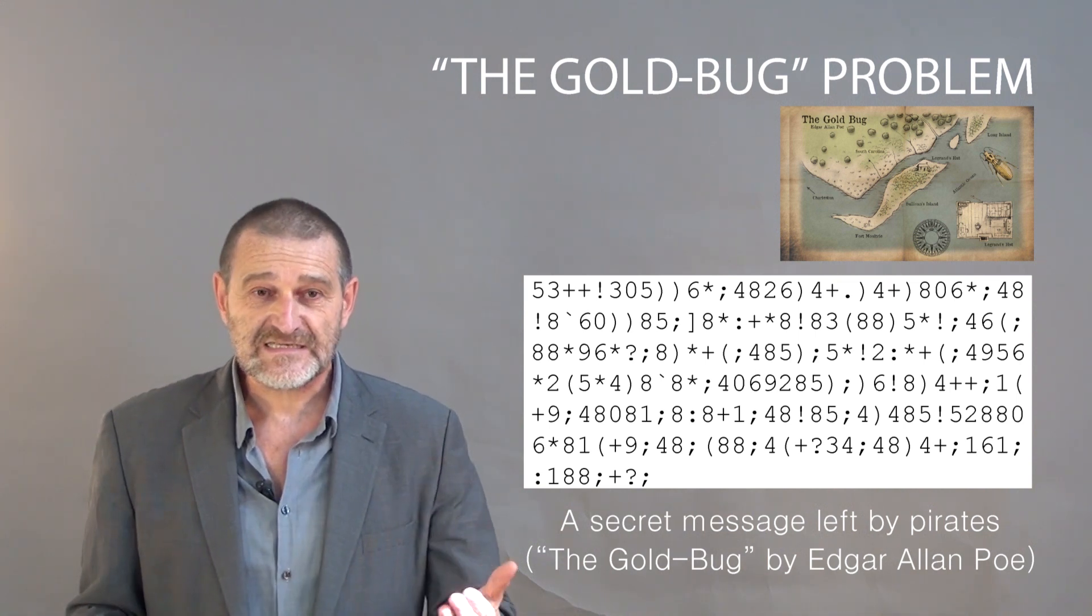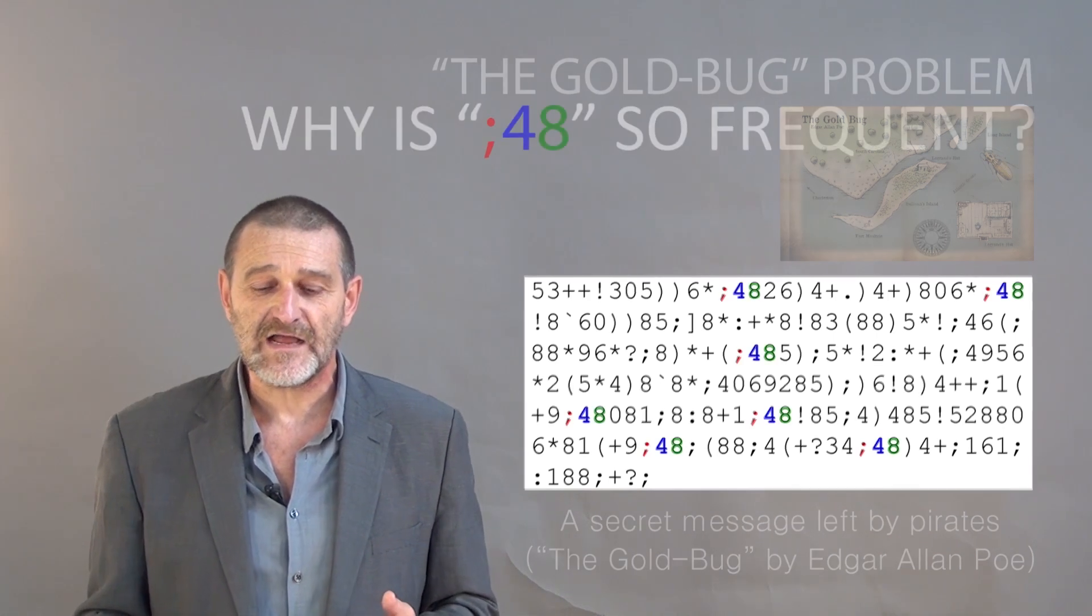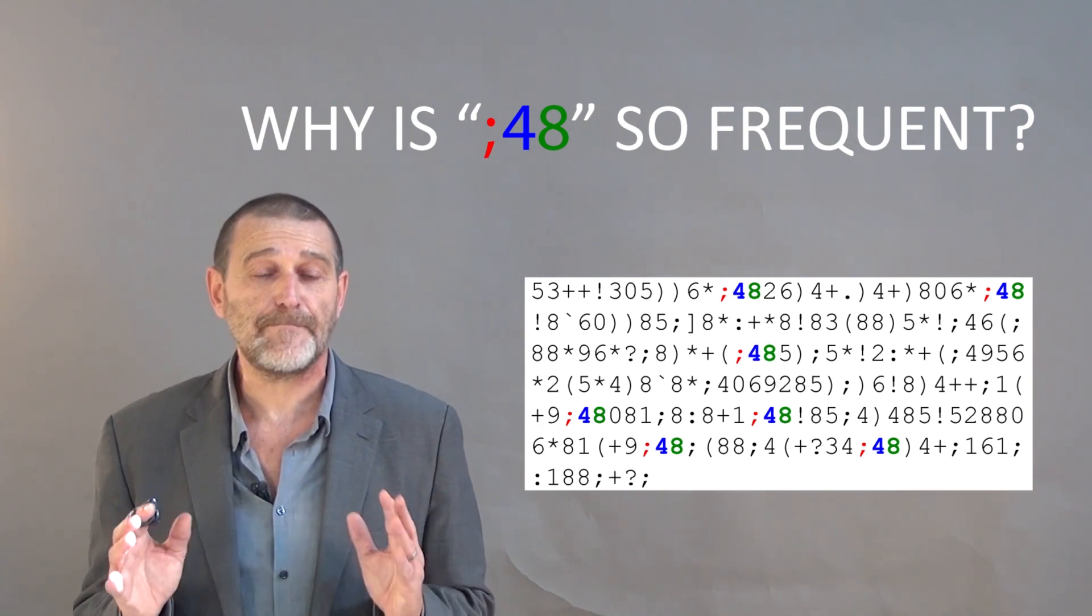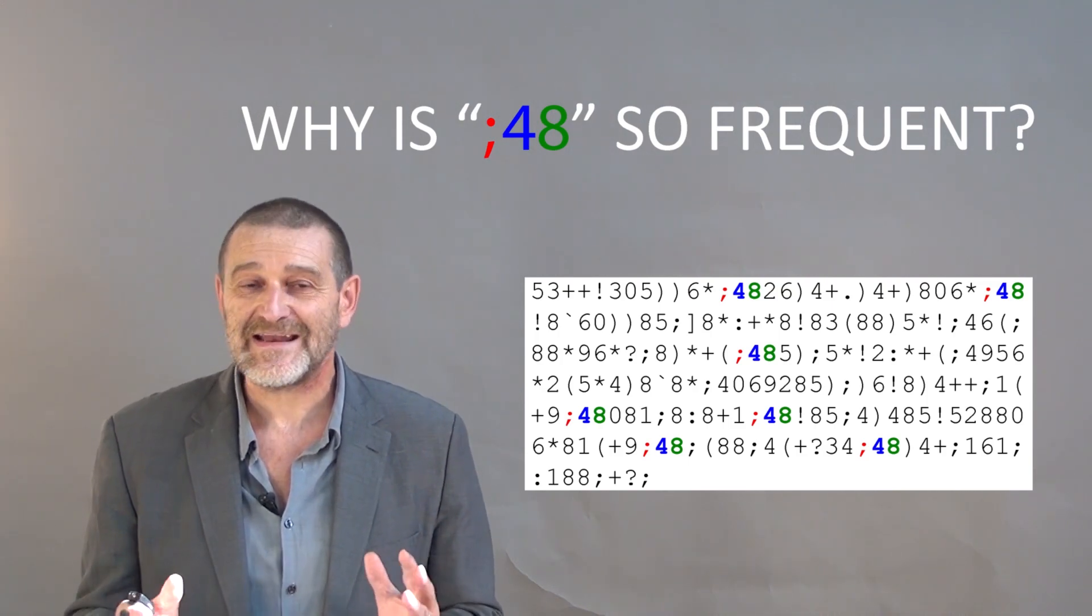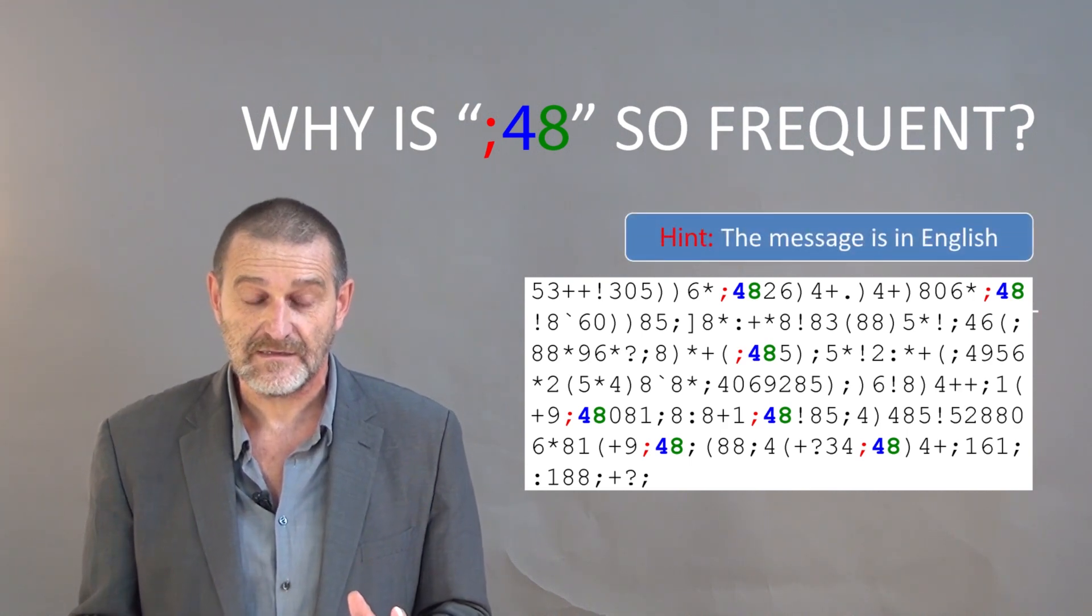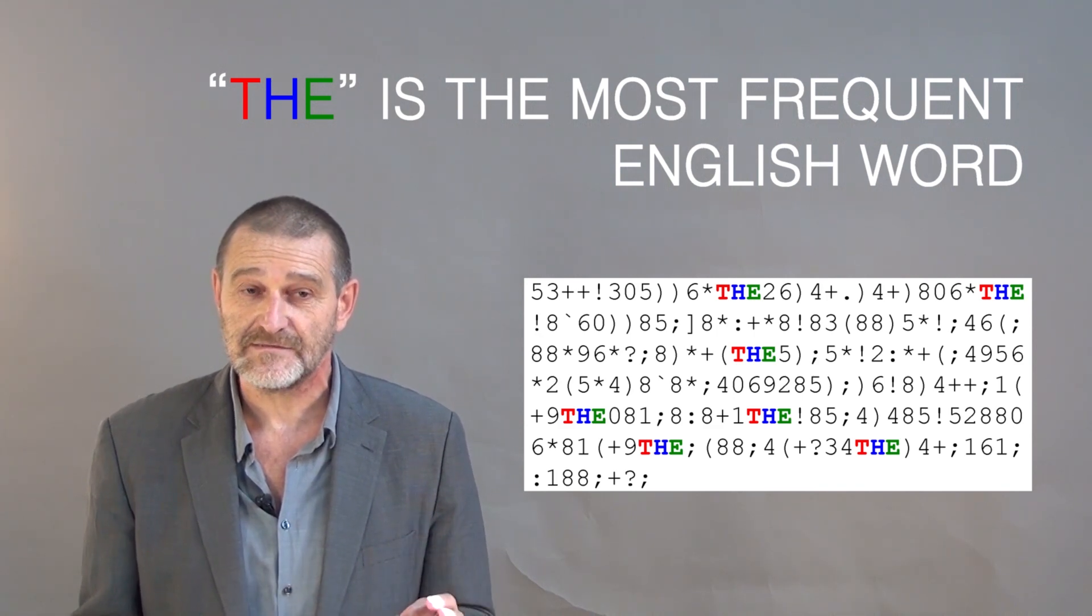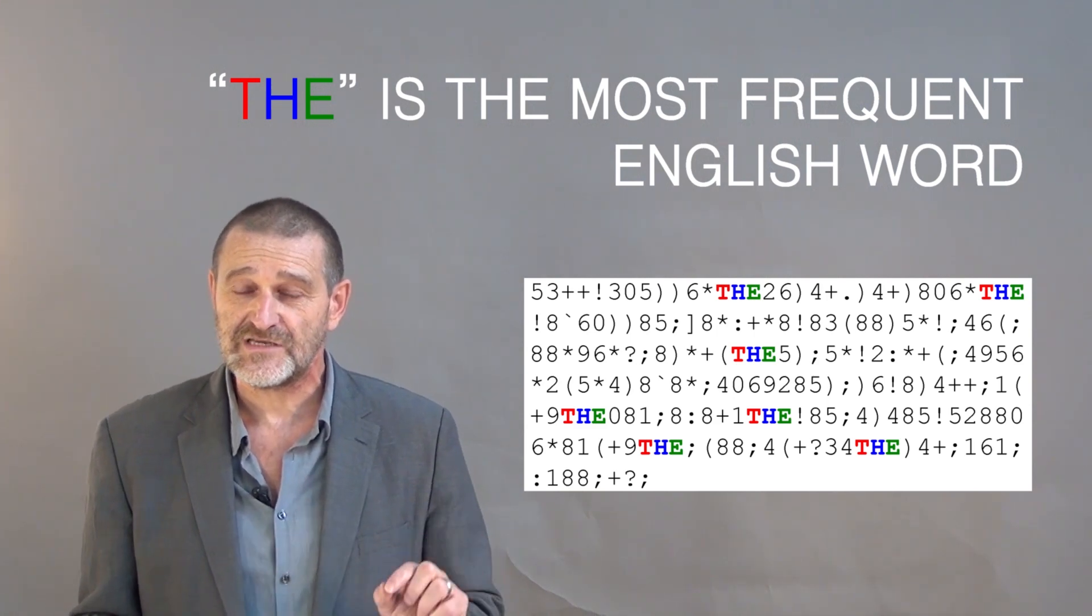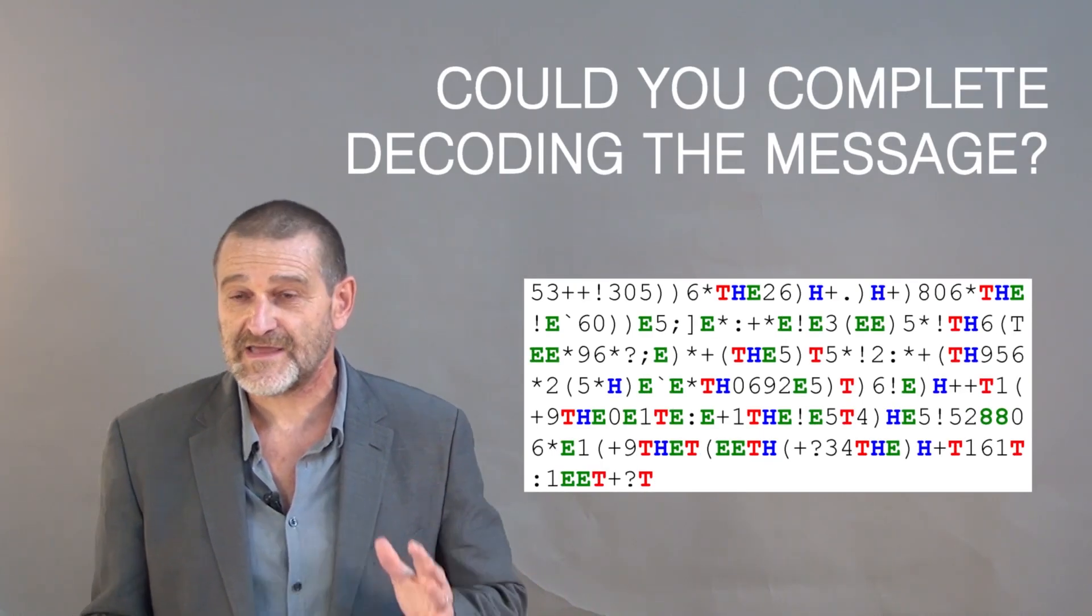The only thing he saw is this text. How would you tell what is written, what is coded in this text? What Legrand noticed is that a combination of three symbols, semicolon, four and eight, appears surprisingly frequently in this text. Does it suggest an idea on what's written in the message? Here's the hint. The message is in English. And here's another hint. There is the most frequent word in English. And that's why he was able to substitute semicolon four eight for THE and this message started to make sense. And if you have time, you can complete decoding.